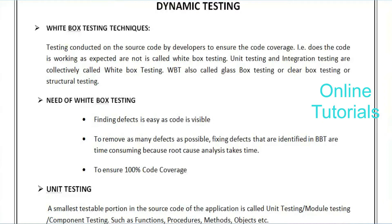White box testing has some other names: clear box testing and glass box testing. The reason for the name 'glass box' is that the code is transparent — you can see inside. It is testing done on the source code, so they call it glass box testing. It is also called structural testing.